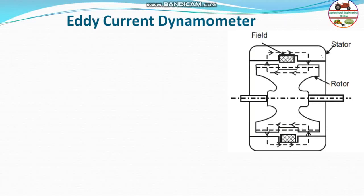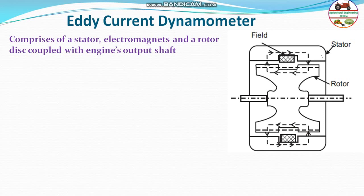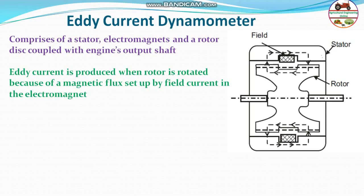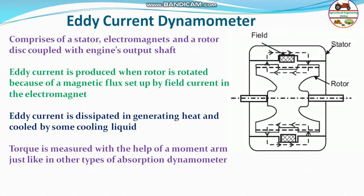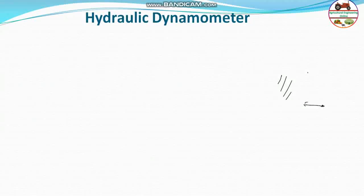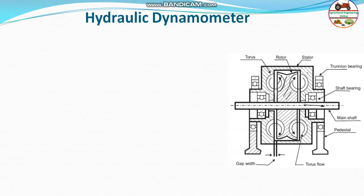The eddy current dynamometer consists of a stator electromagnet and a rotor disc coupled to the engine output shaft. Eddy currents are produced when the rotor rotates due to the magnetic flux set up by the field current in the electromagnet. This generates a lot of heat which must be dissipated by a cooling liquid. Torque is measured with the help of a moment arm, similar to other dynamometers, as the stator tends to move due to the eddy current.